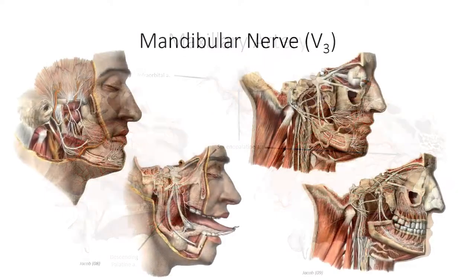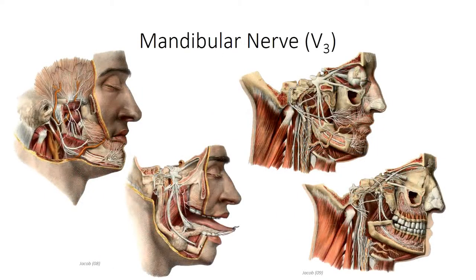The main neural component of the infratemporal fossa is the mandibular branch of the trigeminal nerve. The main stem of the trigeminal nerve branch emerges in the infratemporal fossa through the foramen ovale located in the floor of the cranium, where small branches come off to supply the meninges and muscles of the middle ear chamber. The trigeminal nerve will almost immediately split into two principal divisions. The anterior division supplies the motor branches to the muscles of mastication, including the deep temporal nerve, as well as a sensory buccal branch that supplies the mucosa along the cheek.